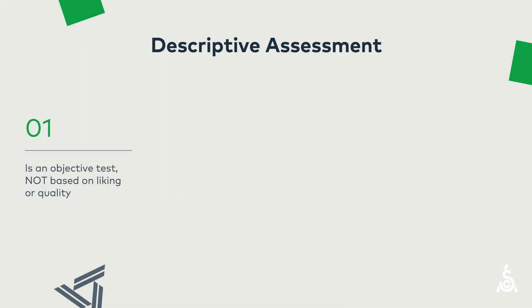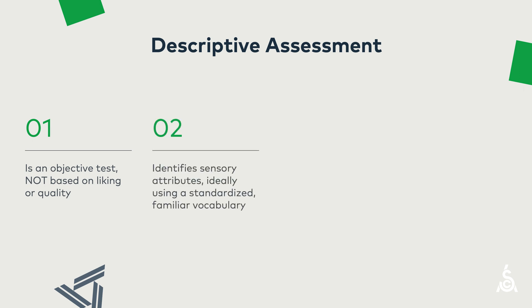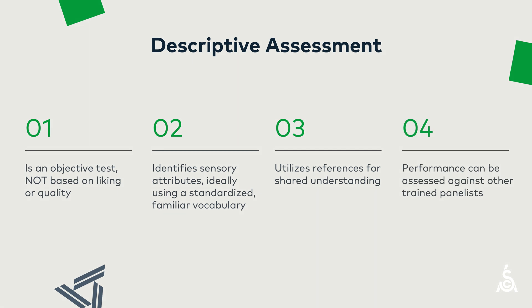Some key things to know about a descriptive assessment. First, it is seen as an objective test, without any basis in liking or quality. For example, a coffee might be described as fruity without any judgment of whether fruitiness is a good or bad thing in coffee. Second, it identifies these flavors — also known as sensory attributes — using a standardized, familiar vocabulary, and uses references to calibrate testers and create a shared understanding. Finally, an individual taster's performance can be assessed against other trained panelists.